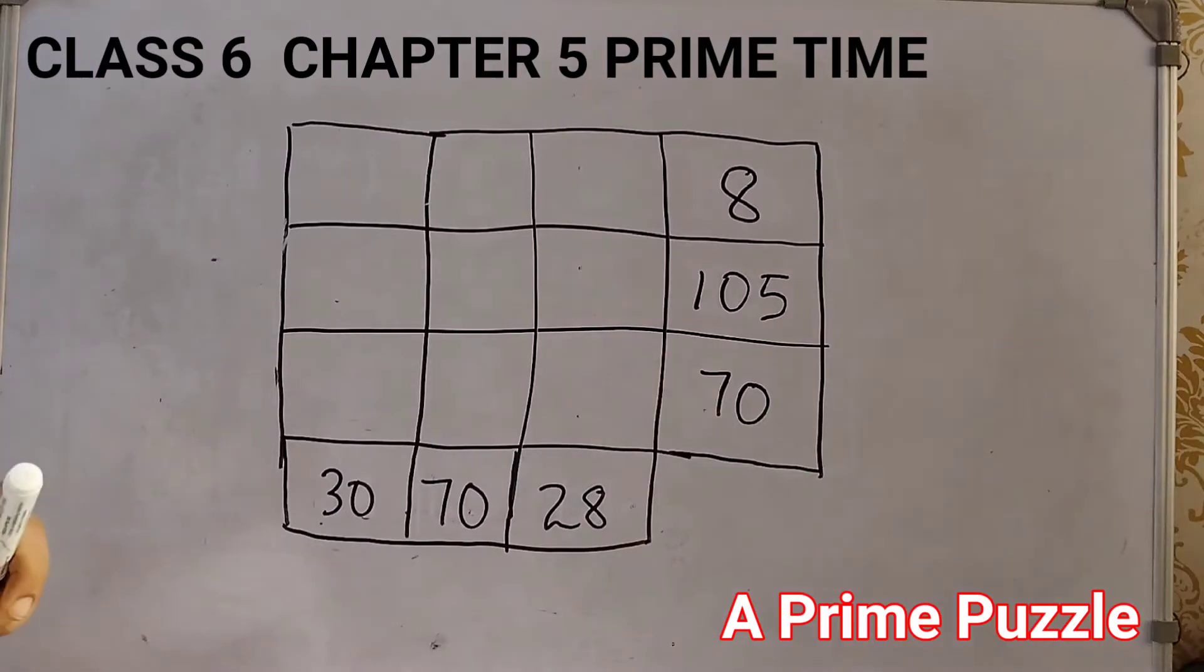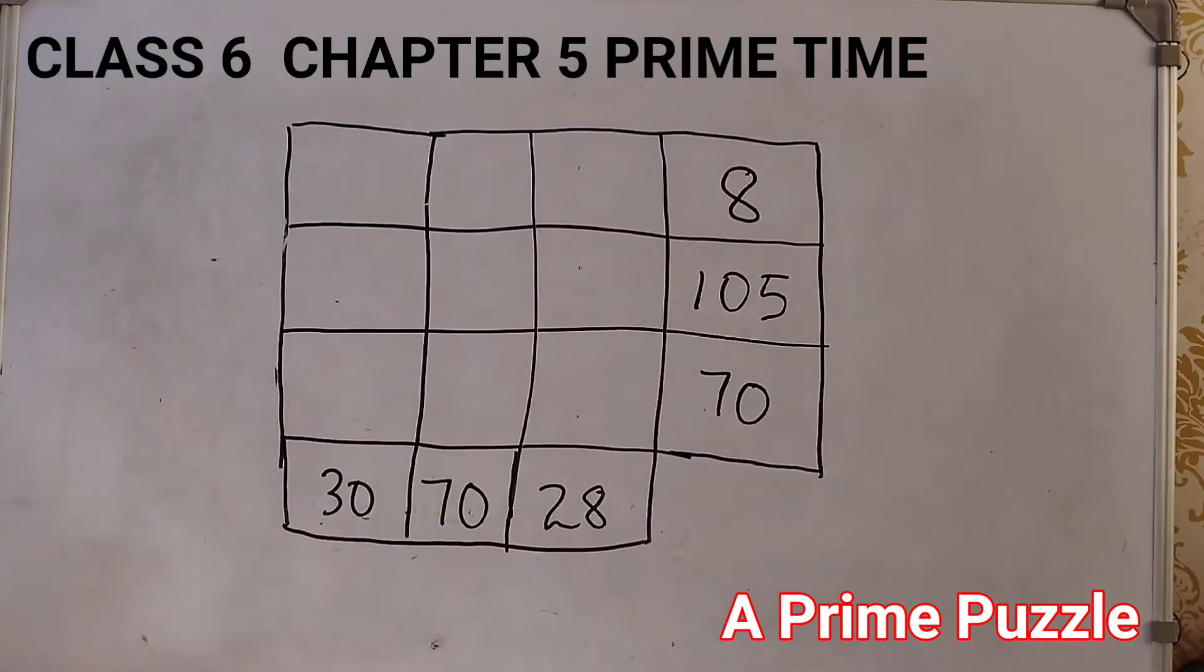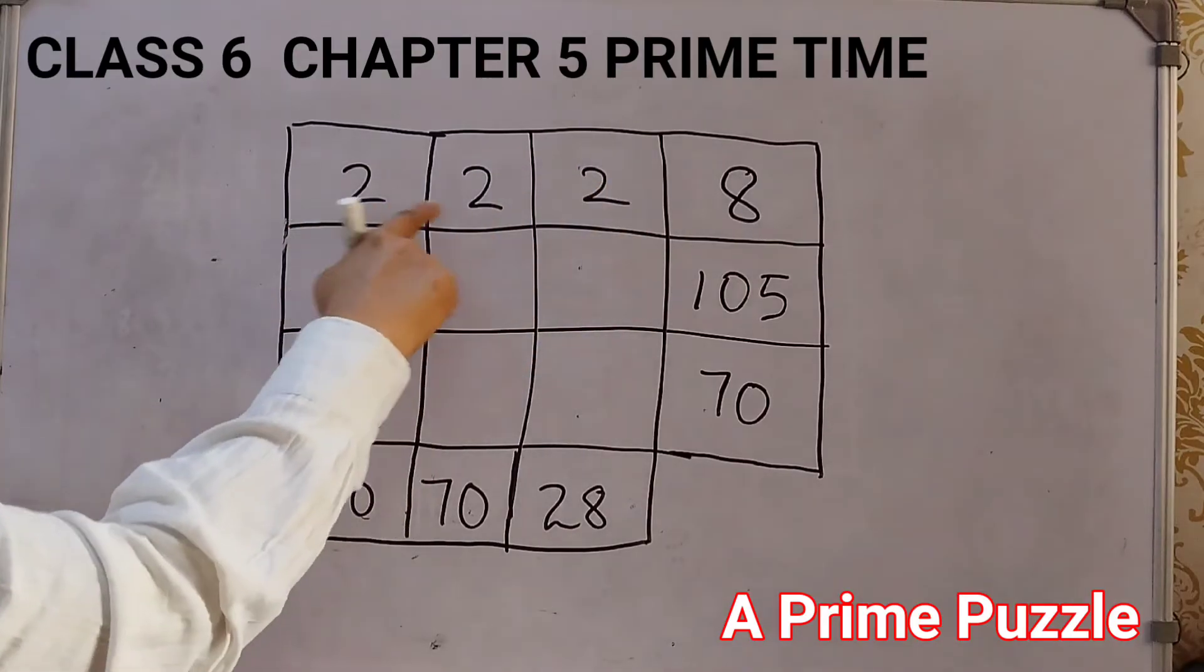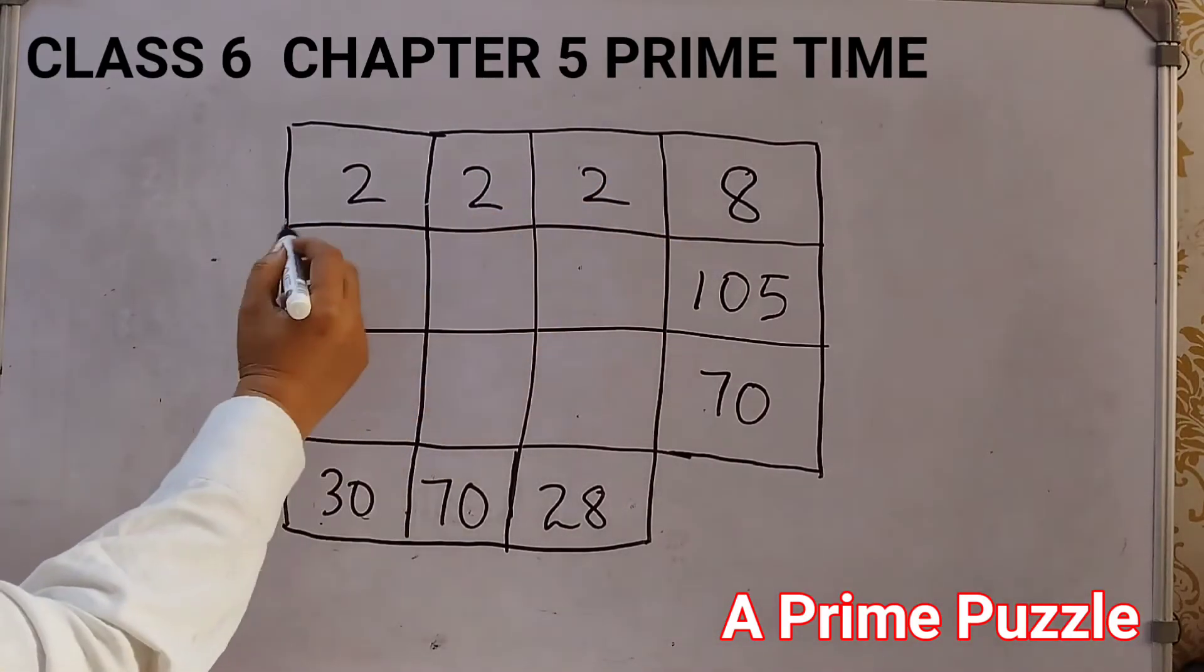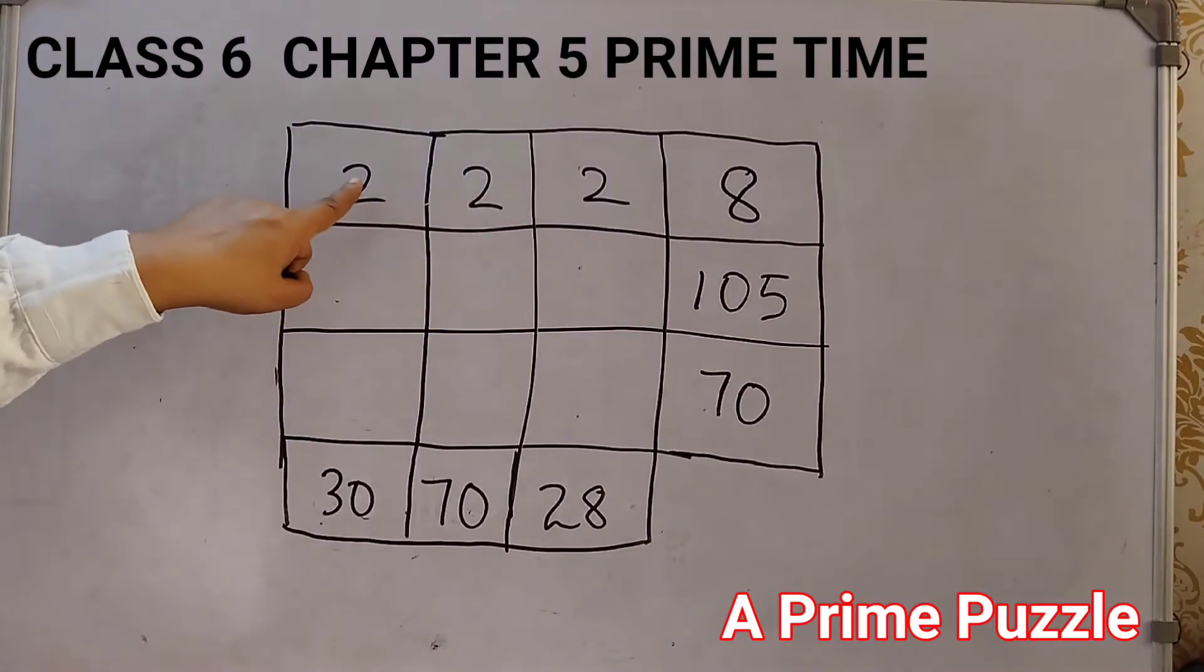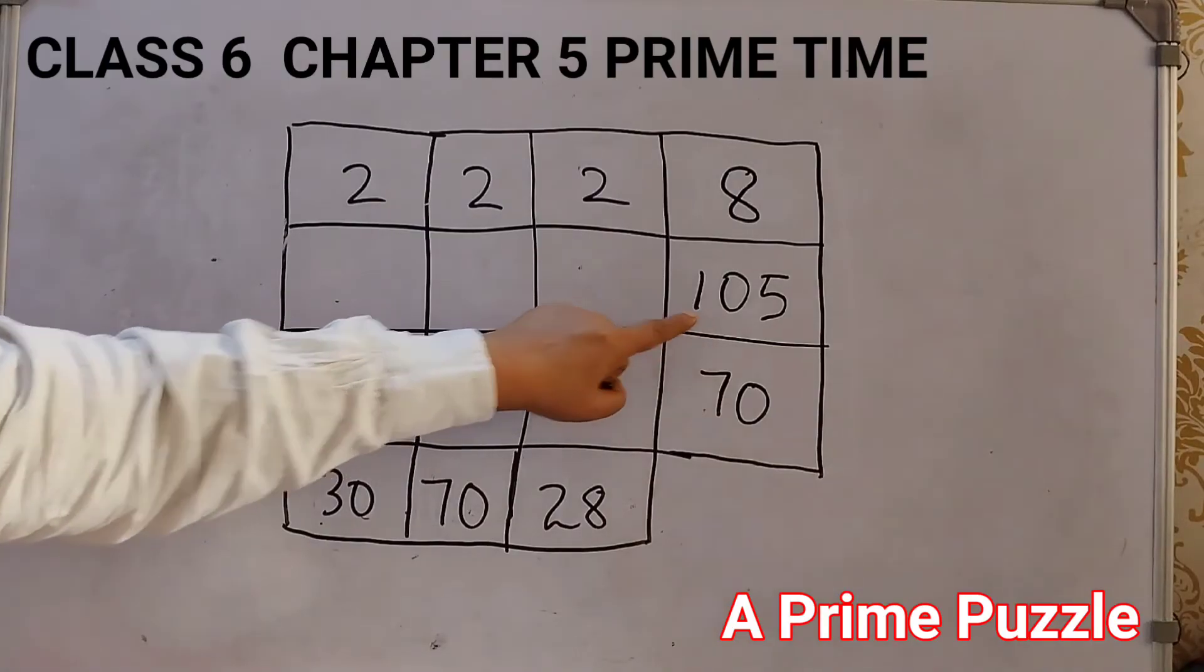If you remember I told in my last video try to find a number which is a perfect cube. We see here 8 is a perfect cube because 2 into 2 into 2, 2 to the power 3 is 8. So the first row we can just fill it up with 2 because it's the same number. Next we will see the prime factors of 105.